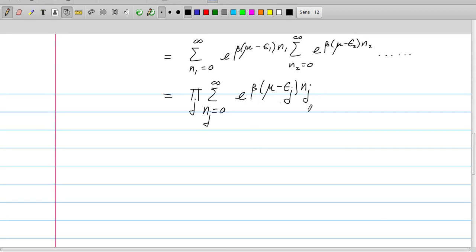So suppose we are dealing with fermions, what would this sum and product reduce to? Well, we have just two terms in the sum. There's one with nj is 0, in that case we have 1, and we have one with nj is 1, and we obtain e to the power beta mu minus epsilon j. So this is the case for fermions.